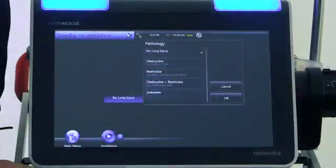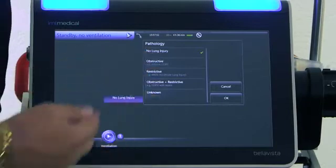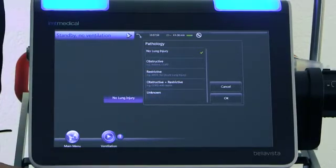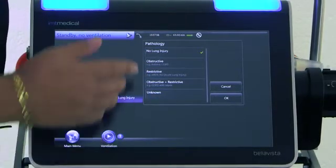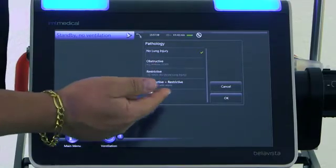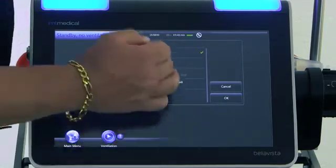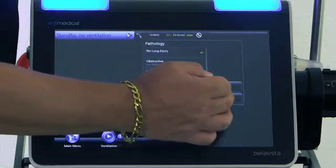So you can input a lung pathology, if it's known to you, to help the ventilator select certain key parameters in terms of the ventilation setup. So you can see obstructive disease, restrictive, unknown. And again, you can do the same way. You select the value and you press OK.